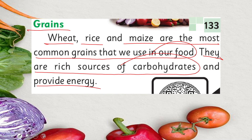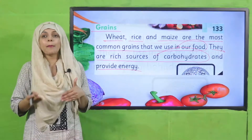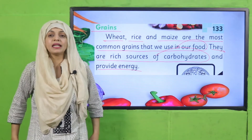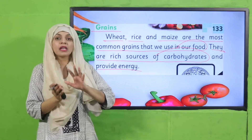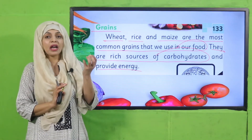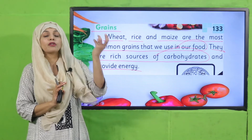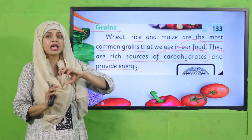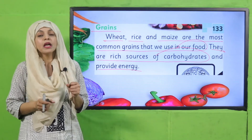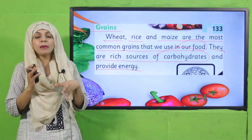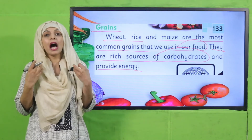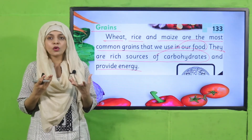Grains are rich in carbohydrates and provide energy. When you eat rice or roti, you get an energy feel and have the energy to fuel your body. Fruits and vegetables are rich in vitamins and minerals — they are not a great source of energy but they help break down food in your body. When you eat a balanced diet, you can live the healthiest lifestyle.